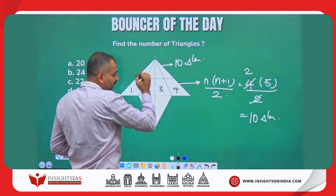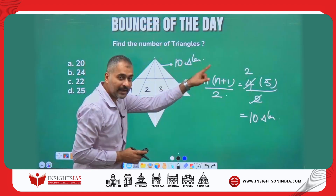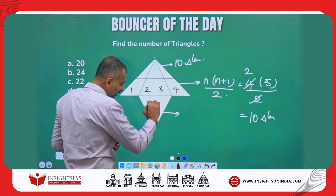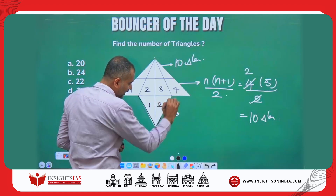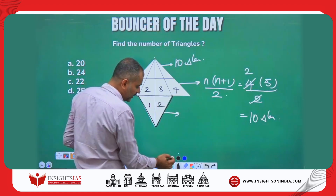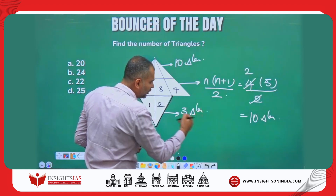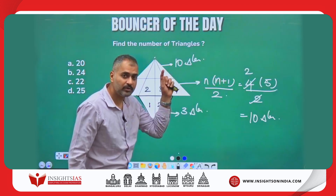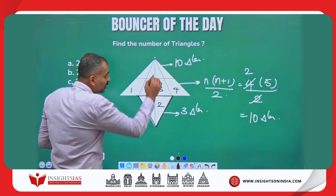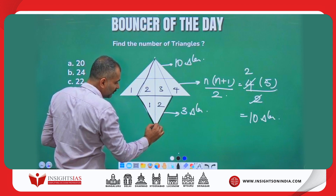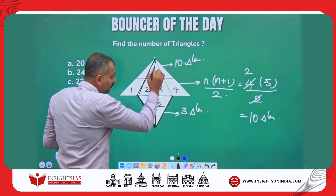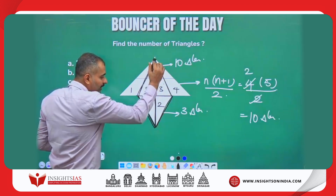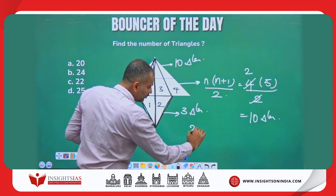Similarly, this half of it will also give another 10 triangles. Now when you come to the lower part here, this has 1 and 2 smaller triangles and the bigger one — totally 3 triangles. You can count this manually, or substitute: 2 into 2+1 divided by 2, which is 3. And also the combination of the inverted one and the straight one consists of another 2 triangles. So totally that is 2 triangles.